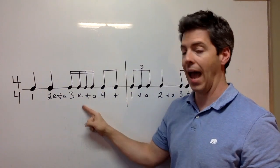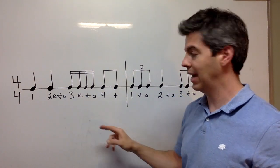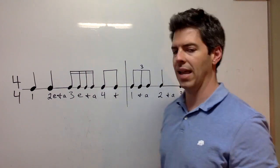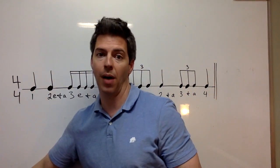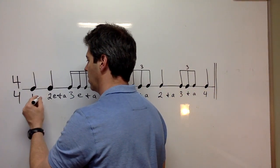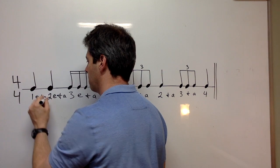So we counted out loud, we subdivided, and we anticipated when we could. Let's do that again. One E and a, two E and a. I like to subdivide out as far as possible. I find myself even one or two beats out subdividing. So there we go. How about that?